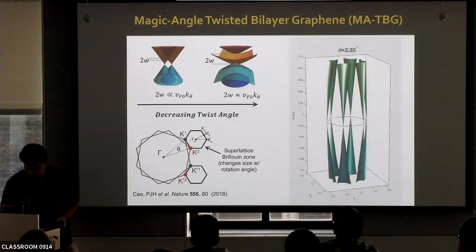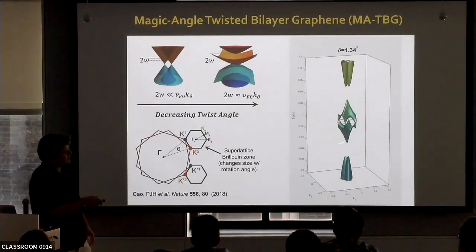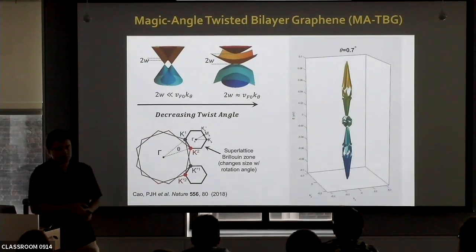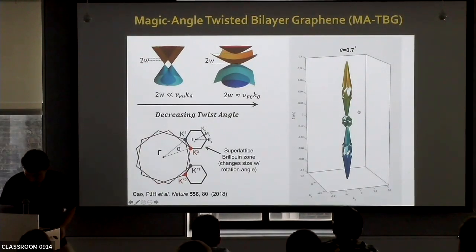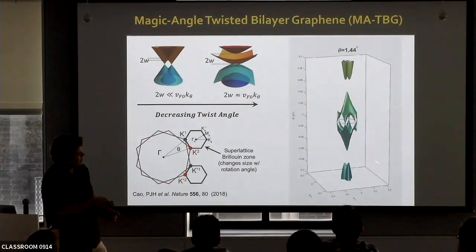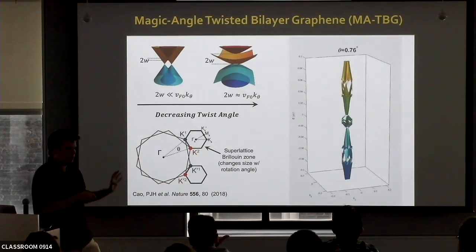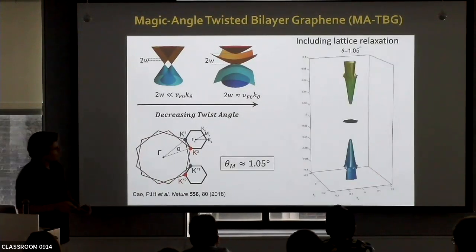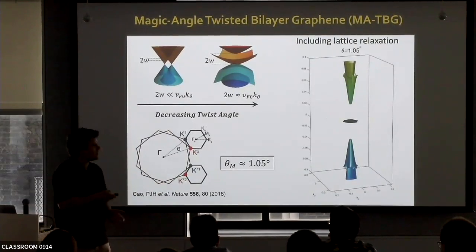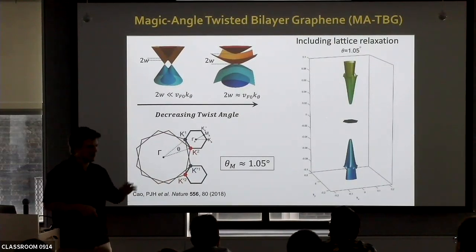Running this movie: you see the angle rotating. At some point you get a set of flatter bands separated by gaps from the next bands. At about 1.1 degrees, it becomes very flat. Then it continues evolving in a complex fashion. If you include lattice relaxation in the x, y, and z directions, it seems that the angle for which the bands become flattest is closer to about 1.05 degrees, although the last digit in this angle continues to fluctuate depending on models and parameters.